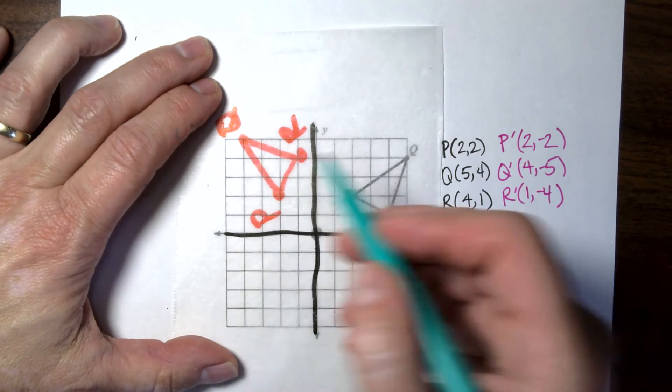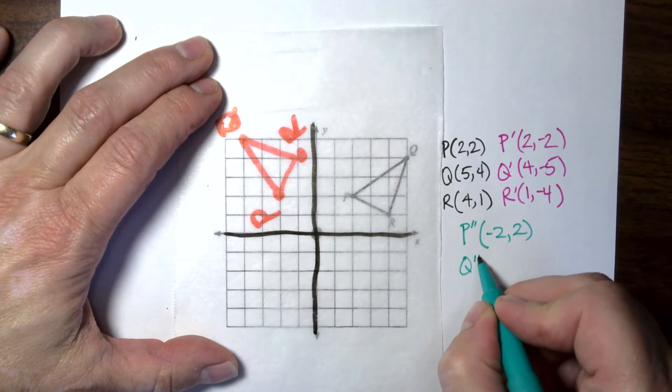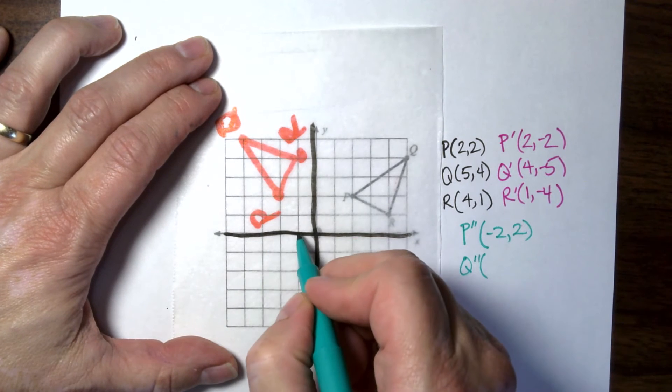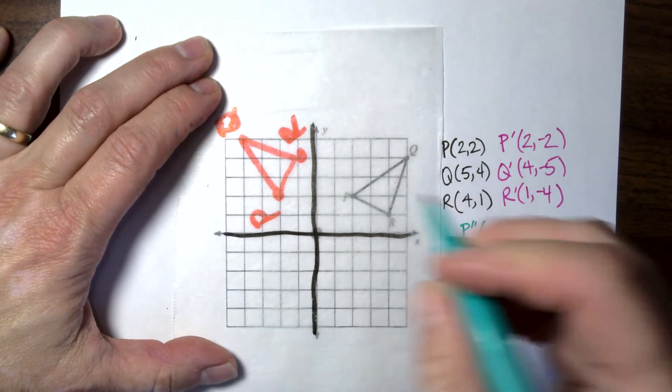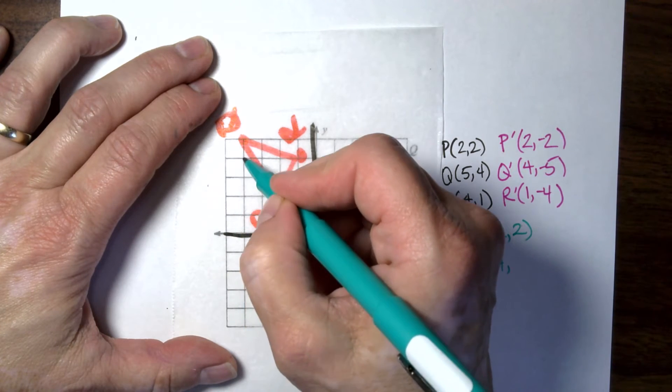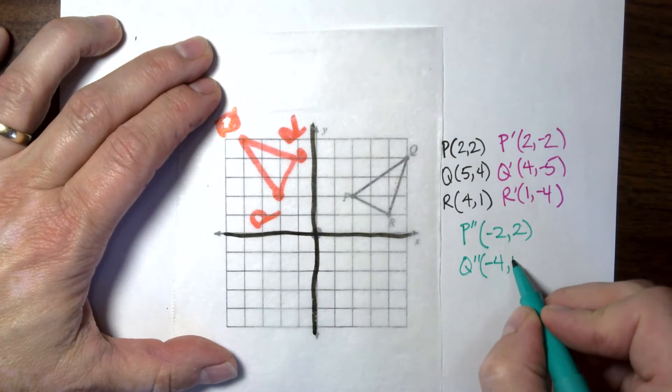And our Q, which I'm going to call double prime, that is negative 4. And it's going up to positive 5.